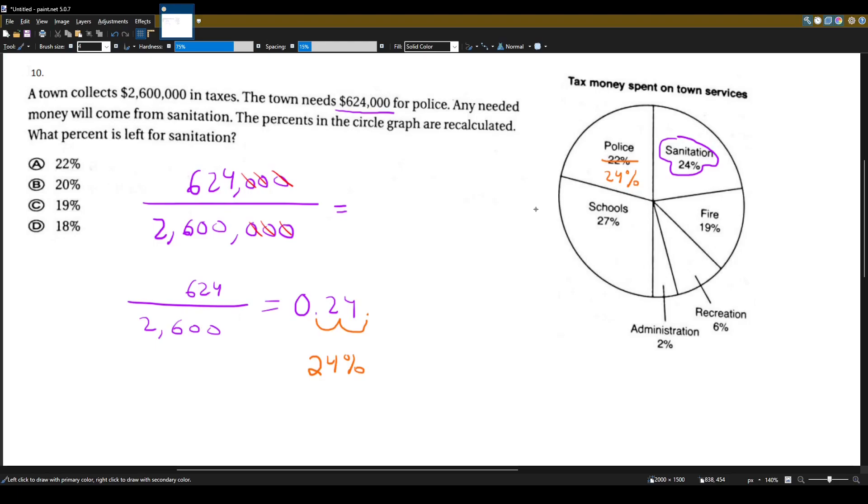So they gained 2%, plus 2%. And here's the important part: any needed money will come from sanitation, which means if the police gained 2%, it had to come from somewhere. It came from sanitation. The police gained 2%, that means sanitation lost 2%. So sanitation is no longer 24%, it's 22%. Why? Because they lost 2%, it went to the police.